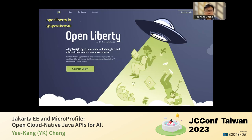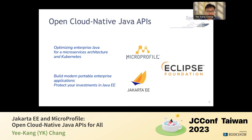You can find out more information about Open Liberty at openliberty.io. Open Liberty is a lightweight open source Java runtime for developers to build cloud native Java applications and microservices. Today we'd like to talk about Jakarta EE and MicroProfile — both are open and collaborative efforts under the Eclipse Foundation for innovating and providing cloud native Java APIs. MicroProfile focuses on optimizing enterprise Java for microservices and cloud environments like Kubernetes, while Jakarta EE looks at enabling developers to build portable enterprise Java applications, and it's an evolution of Java EE.